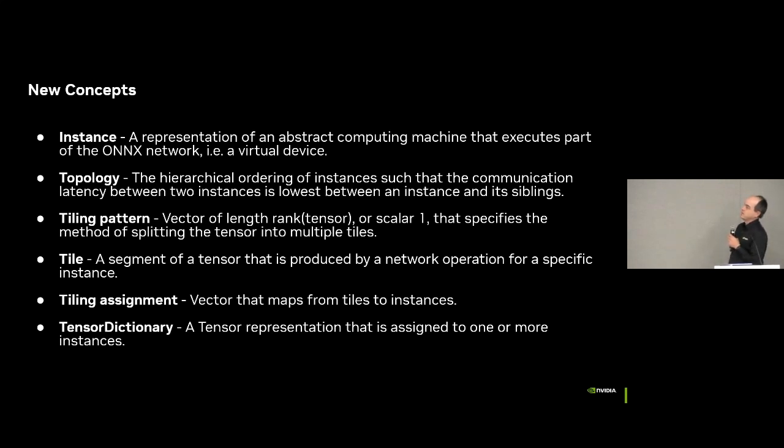Some of the new concepts I'm going to introduce here is an instance. An instance is a virtual device that executes a part of the neural network in ONNX. Second one is a topology. A topology is a multi-hierarchical ordering of instances for multiple devices. The next one is a tiling pattern. It's a vector of length rank of the tensor, or it's a scalar one that specifies how you split a tensor across devices. The tile is the segment of the tensor that is executed on an individual instance, and then the tiling assignment is how you map the tiles to the instances themselves. And then there's a new concept called a tensor dictionary. A tensor dictionary is the representation of all the tensors across devices.